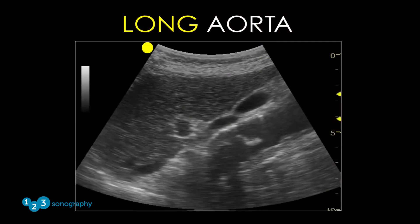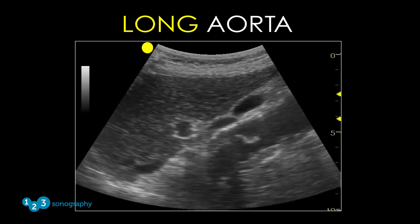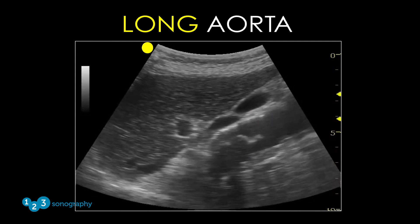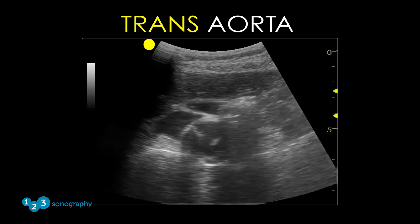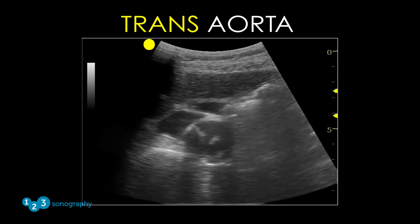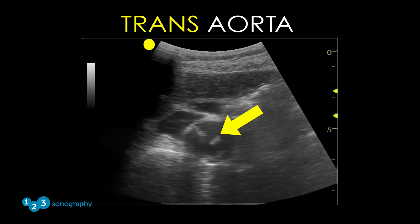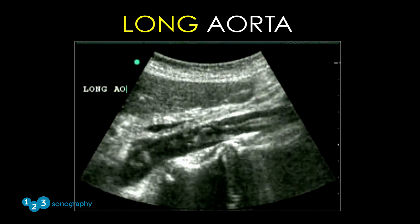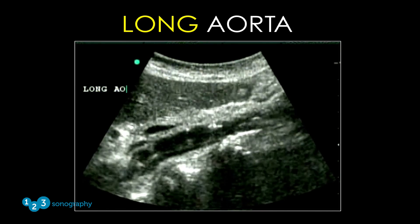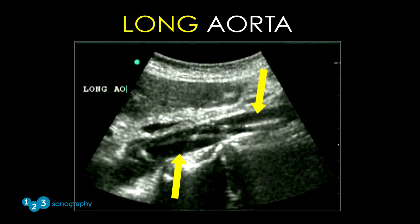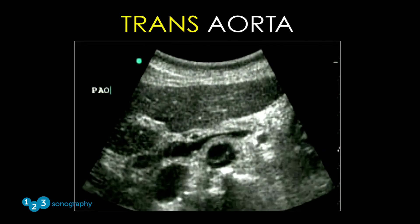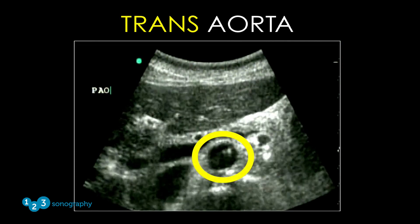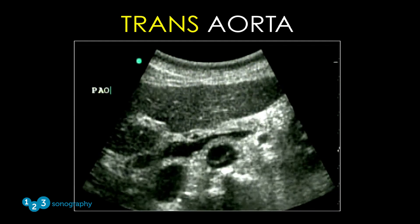This video demonstrates a longitudinal view of a dissection of the abdominal aorta — note the dissection flap moving at the anterior aspect of the lumen. Here is the transverse view of the abdominal aorta from the same patient, where it is easy to see the dissection flap in the center of the aortic lumen. This dramatic video shows a large dissection where the false lumen changes in size with each pulsation of blood flow, again with the dissection flap clearly visible in the transverse view.